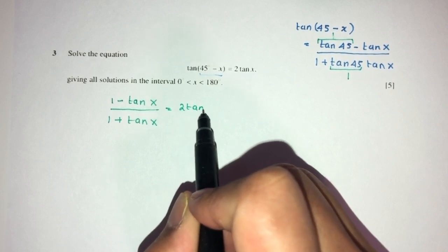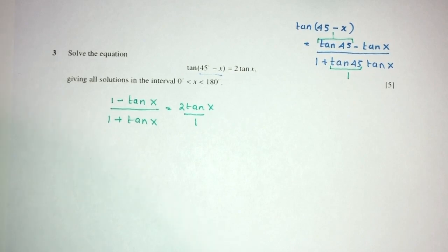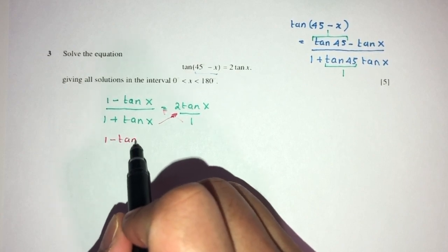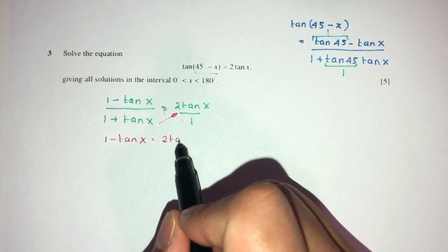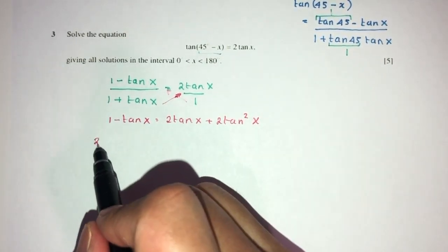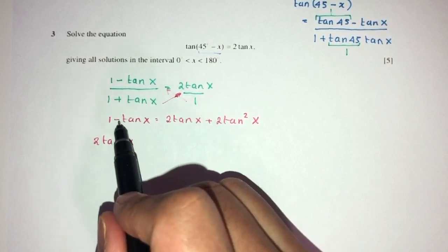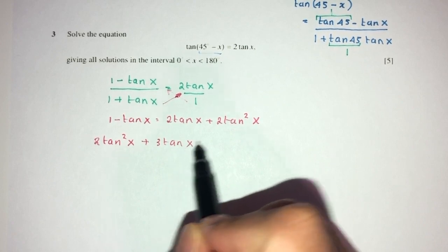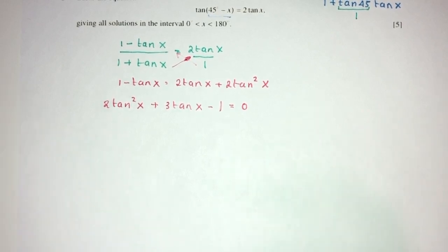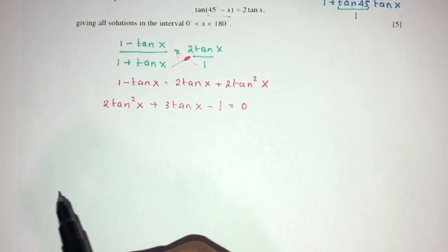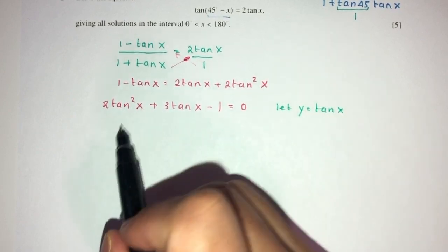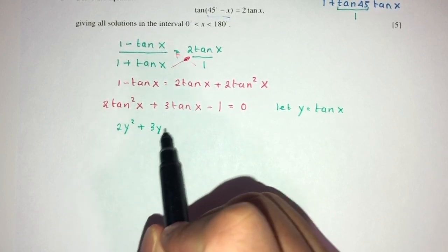Now cross multiply: 1 minus tan x equals 2 tan x times (1 plus tan x), which gives 2 tan x plus 2 tan squared x. Sending everything to one side: 2 tan squared x plus 3 tan x minus 1 equals 0. Let y equal tan x to simplify, giving 2y squared plus 3y minus 1 equals 0.